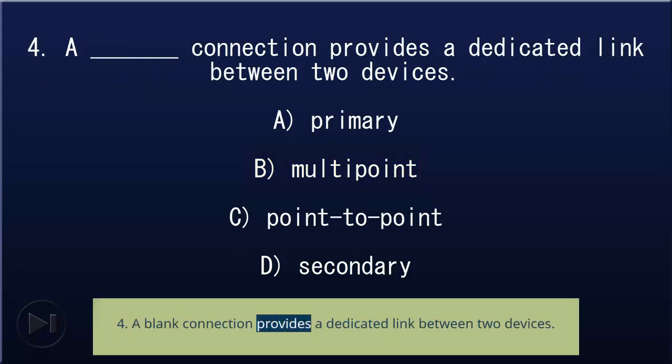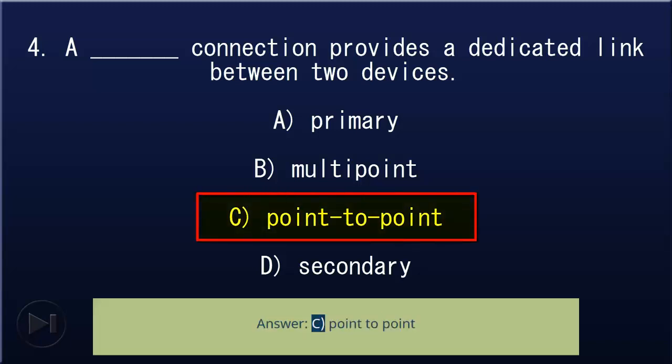4. A blank connection provides a dedicated link between two devices: A) primary, B) multipoint, C) point-to-point, D) secondary. Answer: C, point-to-point.